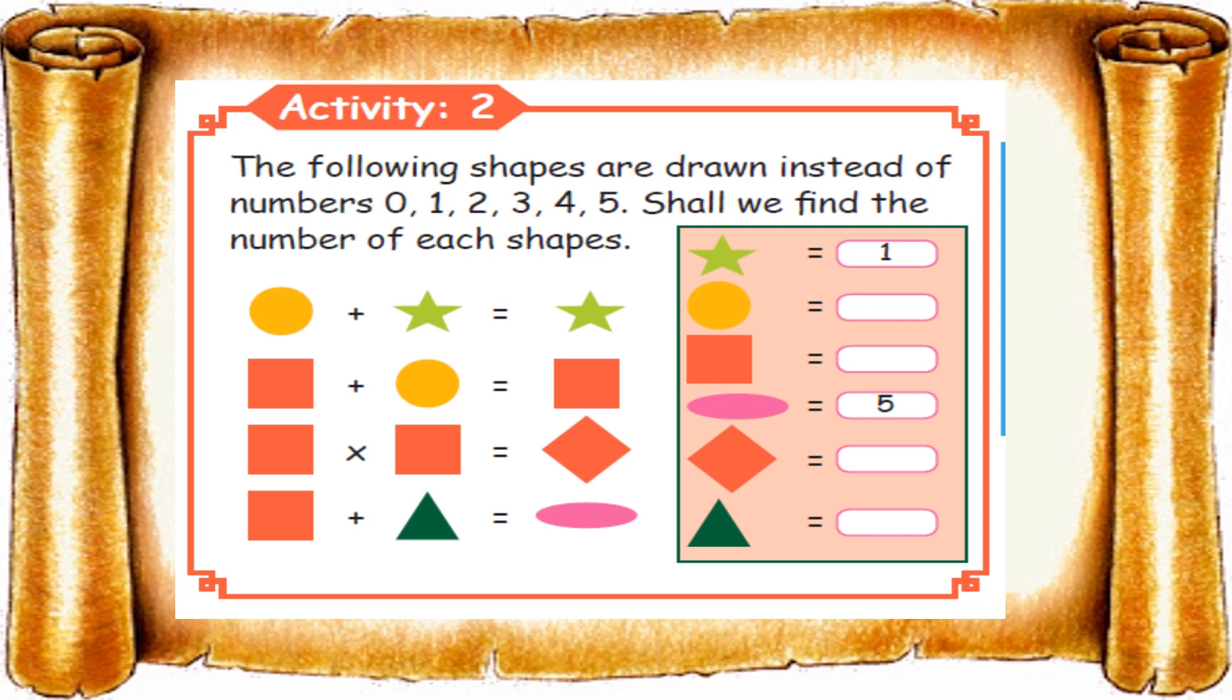Activity 2. The following shapes are drawn instead of numbers 0, 1, 2, 3, 4, and 5. Shall we find the number each shape represents? Like dog and cat, we'll find the answer for each shape. Look at the right side box: star equals 1 and oval equals 5. These two are the hints. From these hints we'll find the remaining. So one and five are already fixed.